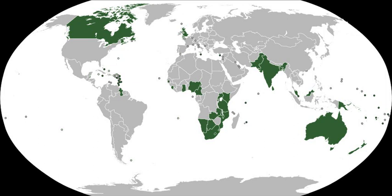After World War II ended, the British Empire was gradually dismantled. Most of its components have become independent countries, whether Commonwealth realms or republics, and members of the Commonwealth. There remain the 14 mainly self-governing British overseas territories which retain some political association with the United Kingdom. In April 1949, following the London Declaration, the word 'British' was dropped from the title of the Commonwealth to reflect its changing nature.